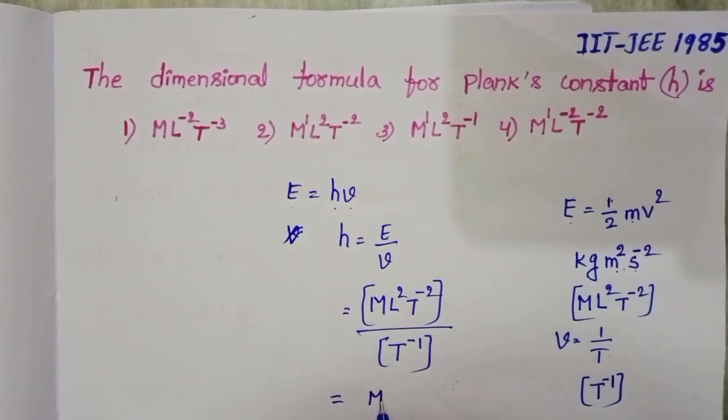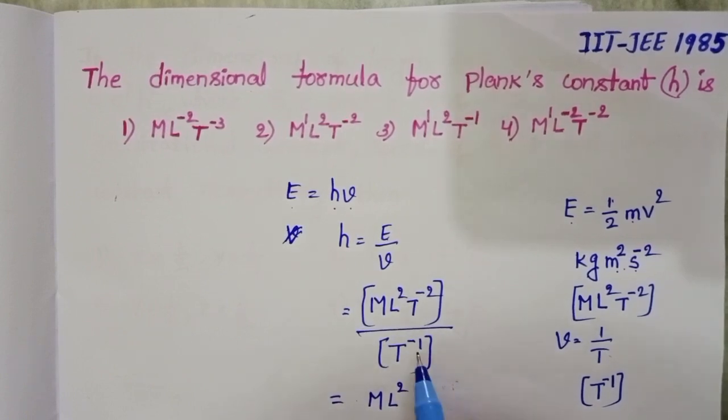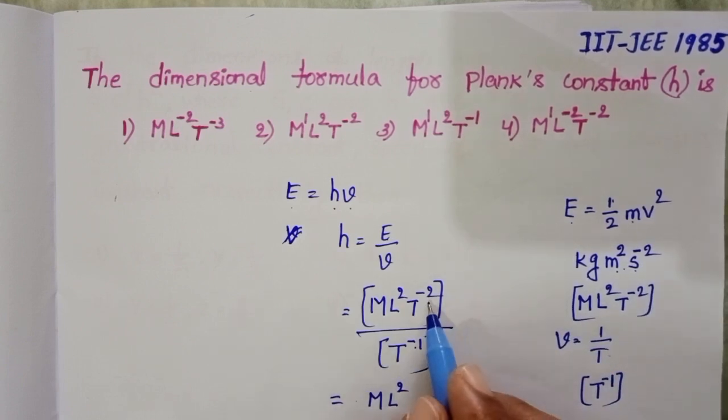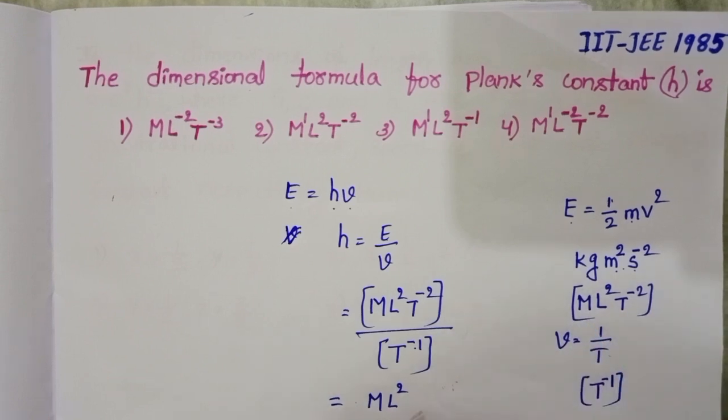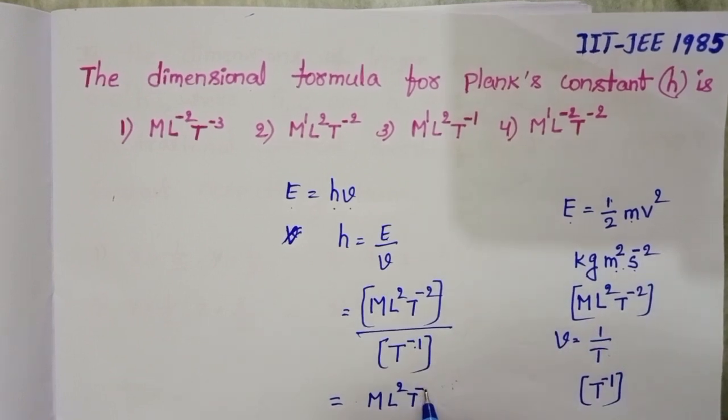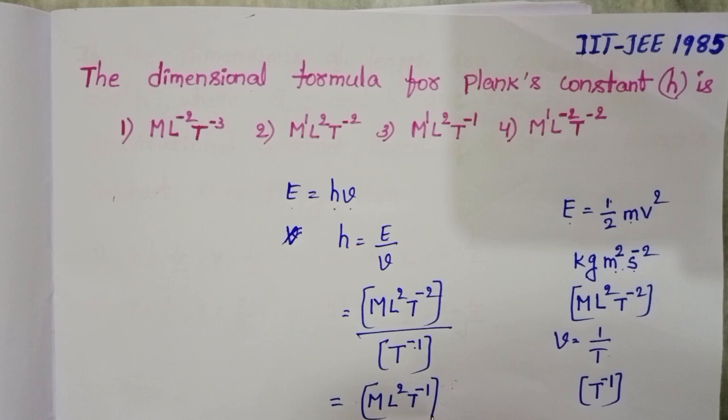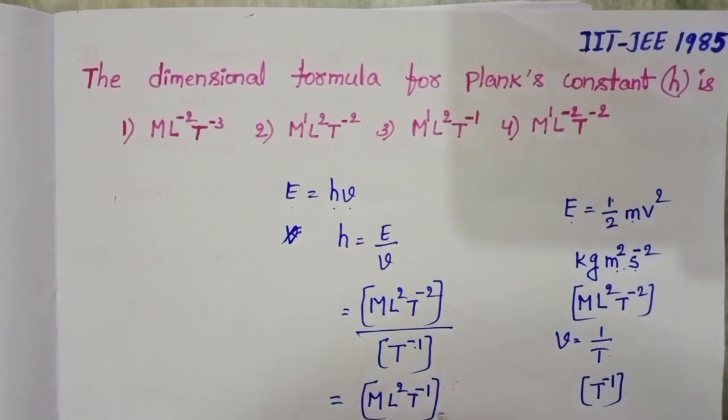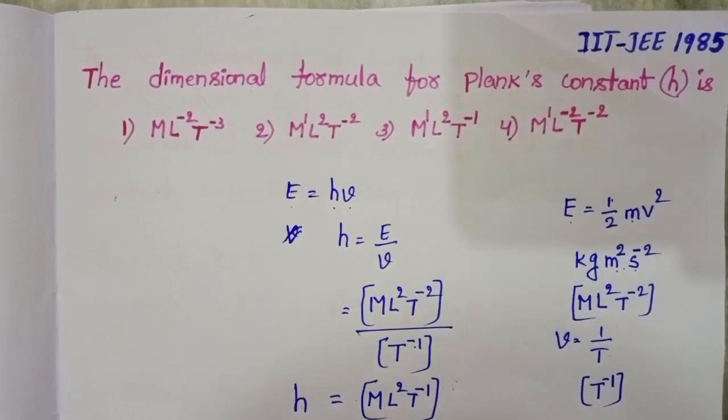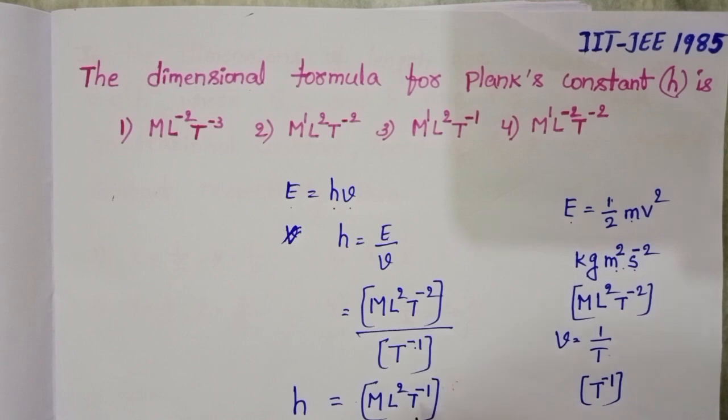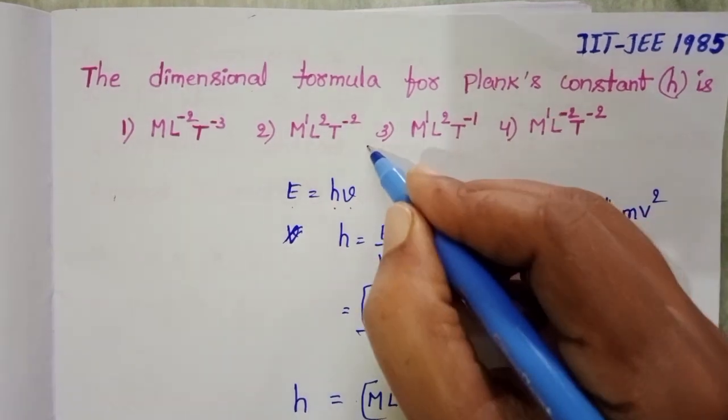Now M¹L²T⁻². T⁻¹ goes to numerator and becomes T¹. Minus 2 plus 1 equals minus 1. So M¹L²T⁻¹ is the dimensional formula of Planck's constant. Third option is correct.